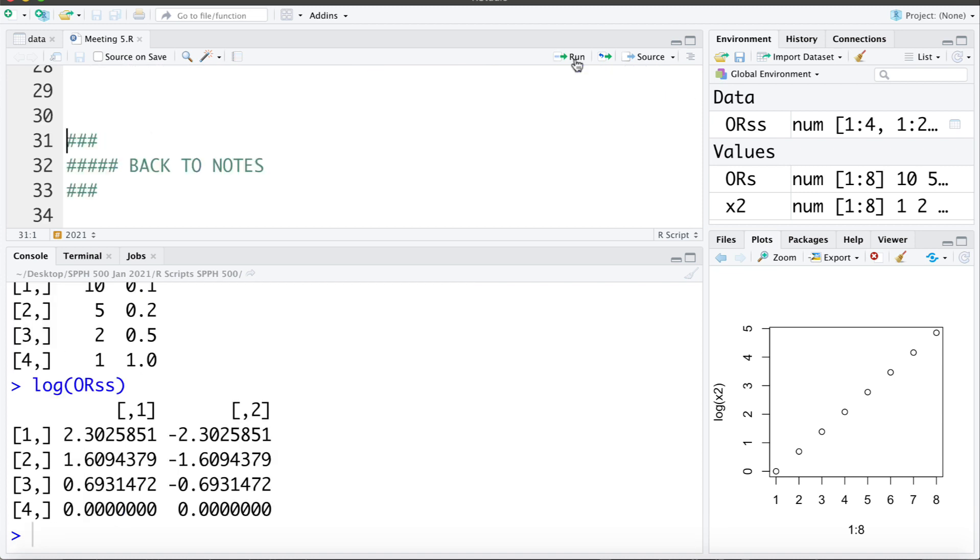And again we can see on the log scale that the odds ratio of say 5 and 1 fifth are the same distance from the null value of 0. Well the null value for the odds ratio is 1. On the log scale the log of 1 becomes 0.